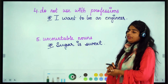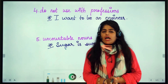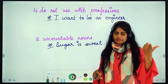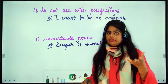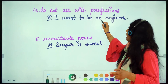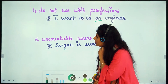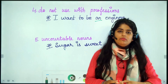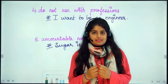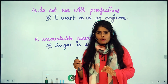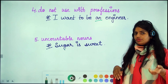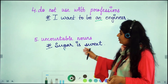Next: we do not use 'the' with professions. With names of professions or jobs, we use either the indefinite article 'a' or 'an.' For example: 'I want to be an engineer,' not 'the engineer.' Next up: uncountable nouns. Uncountable nouns are those which you cannot count — all abstract ideas, all gases, and things made up of smaller parts. We also don't use 'the' with uncountable nouns. For example: 'Sugar is sweet,' not 'the sugar is sweet,' because sugar is an uncountable noun made up of small grains.